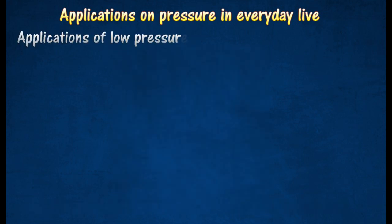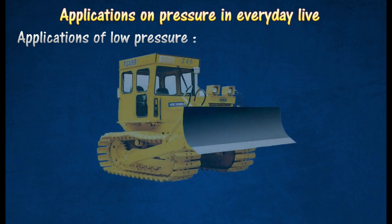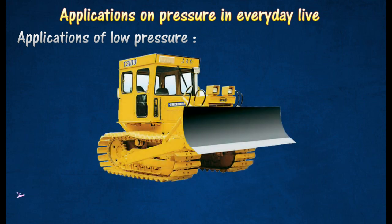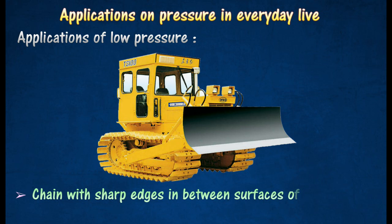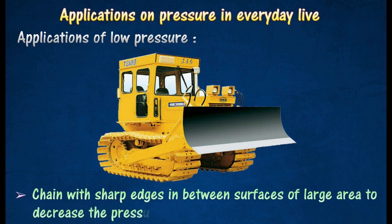Applications of Low Pressure. Bulldozers are usually moved by a chain with large surface area, to decrease the pressure exerted on the ground. In this way, the chain can prevent the bulldozers from sinking into soft ground.